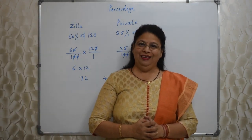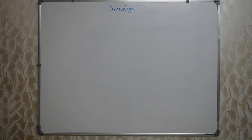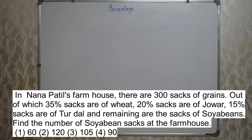Very, very easy. Next problem: In Nana Patil's farmhouse there are 300 sacks of grains. Out of which 35% sacks are of wheat, 20% sacks are of jawar, 15% sacks are of tur, and remaining are the sacks of soya beans. Find the number of soya bean sacks in the farmhouse.